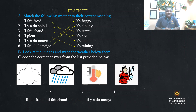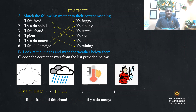Look at the images and write the weather below them. Choose the correct answer from the list provided below. The first one: il y a du nuage. Il pleut — it's raining. Il fait chaud — it's hot or it's sunny. Il fait froid — it's cold.